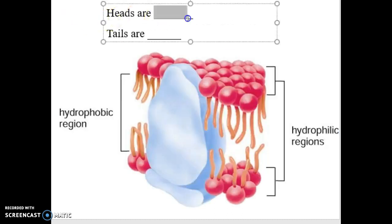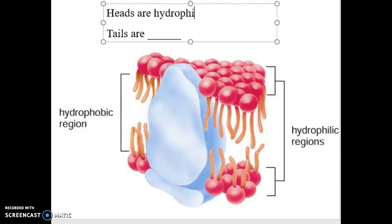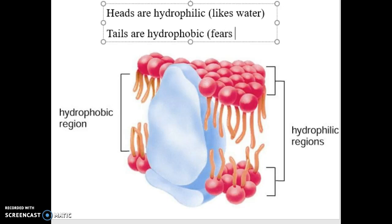Some important terms to remember: when we talk about a phospholipid, the heads are hydrophilic — this means they love or like water. The tails are hydrophobic — this means they fear water. 'Hydro' means water; 'philic' means you like it; 'phobic' means you're afraid of it. Think about arachnophobia or agoraphobia — phobia is a fear of something. This works perfectly for these phospholipids to create the bilayer.